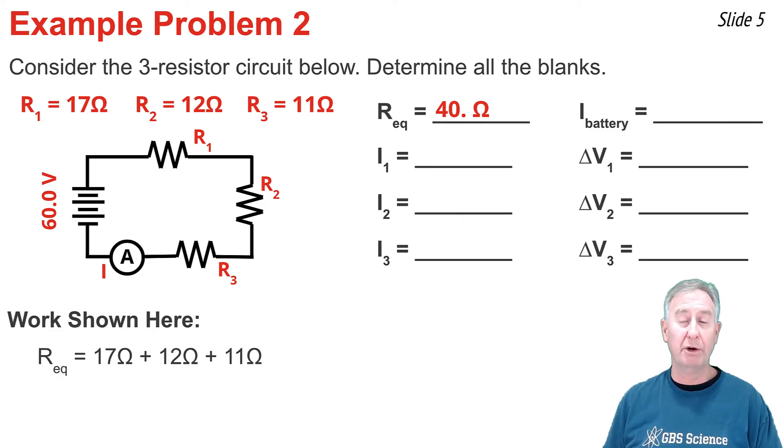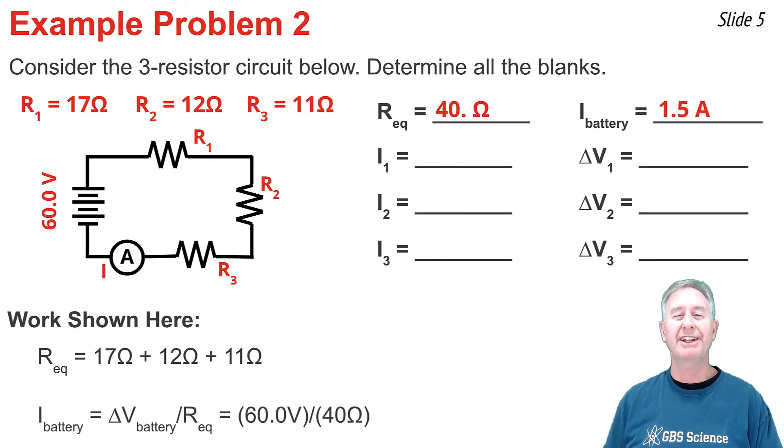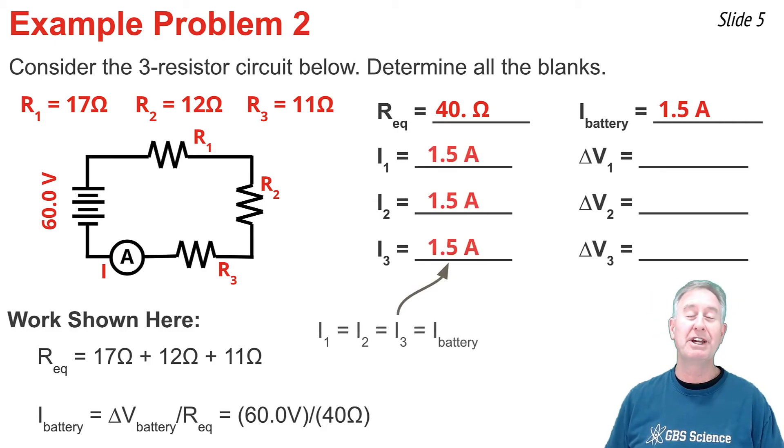Now I'm going to determine the current in the battery. It's simply the battery voltage divided by this equivalent resistance. So I take 60 volts, and I divide it by 40 ohms, and I get 1.5 amps. That's the current in the battery. But current is everywhere the same. So not only is that the current in the battery, that's the current in the first resistor, the second resistor, and the third resistor.